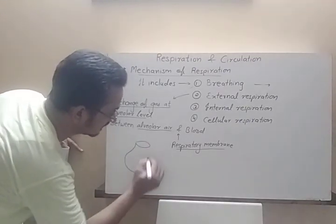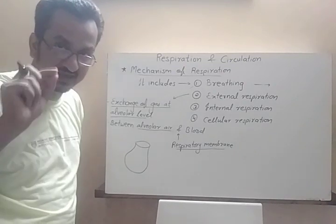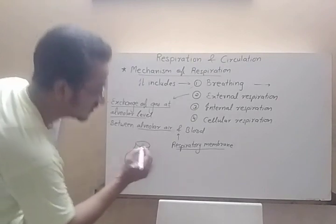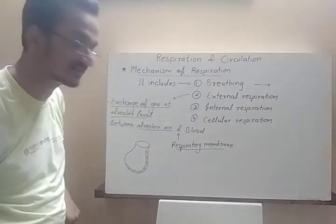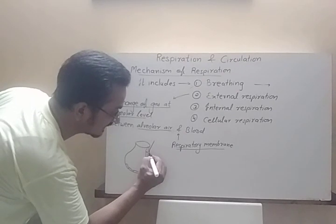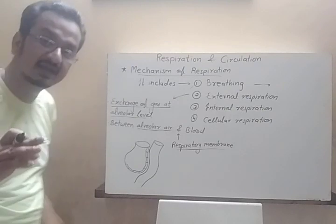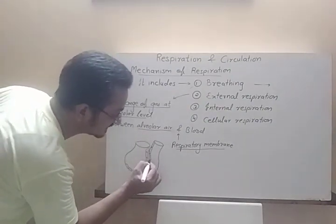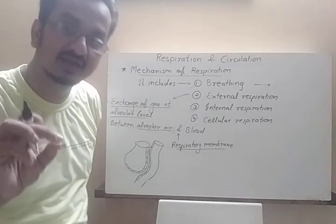The alveoli are made up of a single layer of flat epithelial cells, also called squamous epithelium. So the wall of the alveoli consists of a single layer of flat cells. Around the alveoli, blood capillaries are present. These blood capillaries are also made up of a single layer of flat epithelial cells, which are often called endothelial cells.